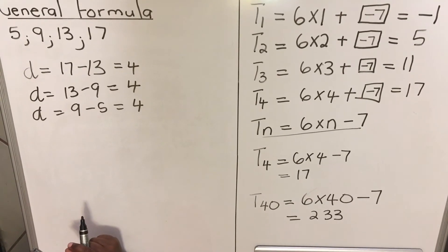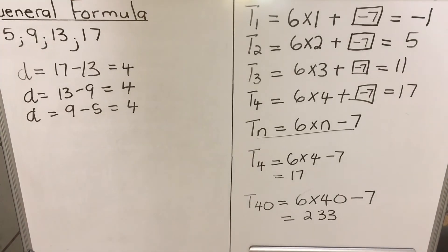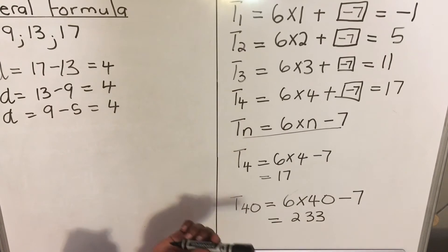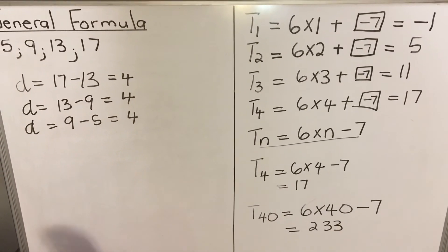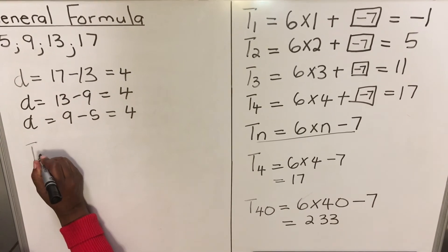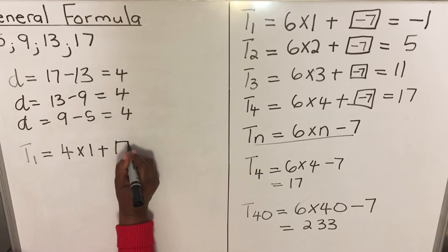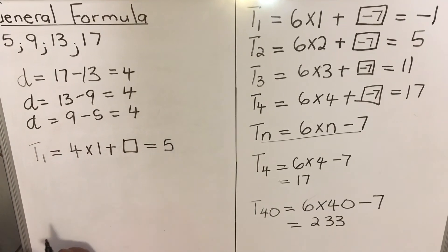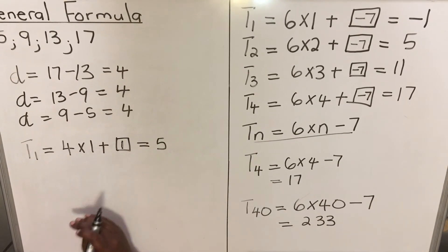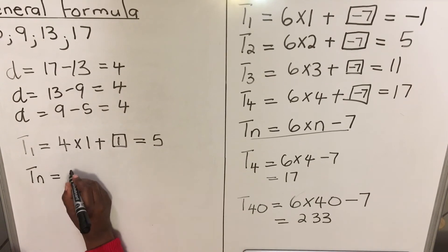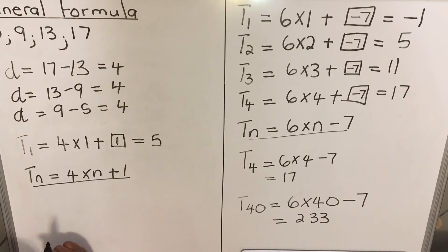Remember our general formula is Tn = common difference times n, plus a particular number. You don't have to test every term — you can use just one. I suggest the first term as it's easiest. T1 = 4 times 1 plus a particular number, and must equal 5. So 4 times 1 plus what gives 5? That number is 1. Therefore Tn = 4n plus 1.